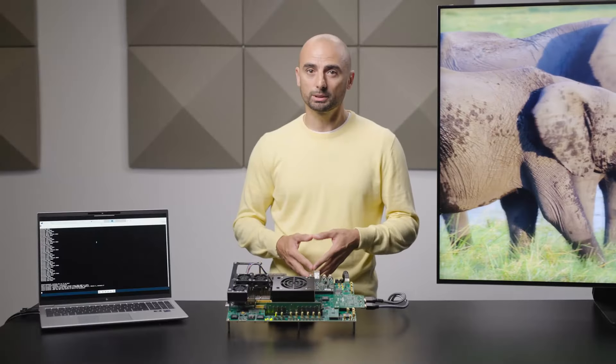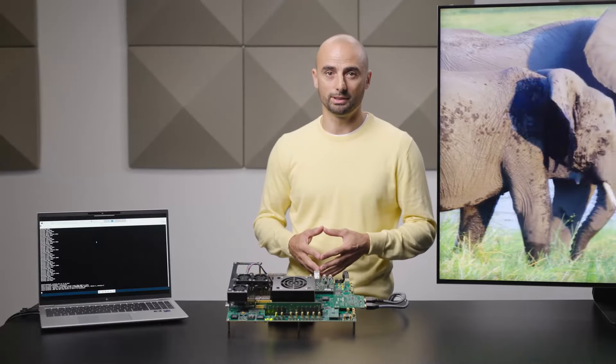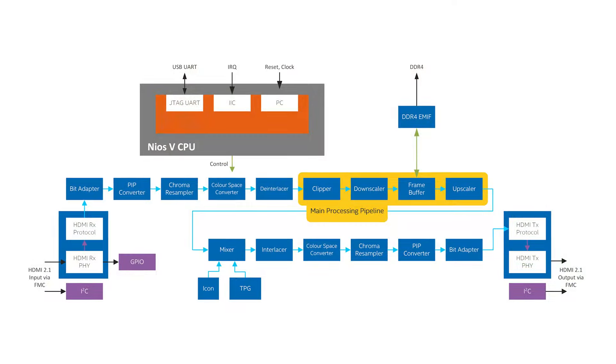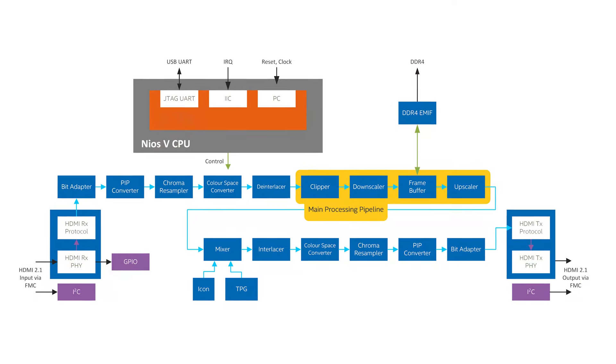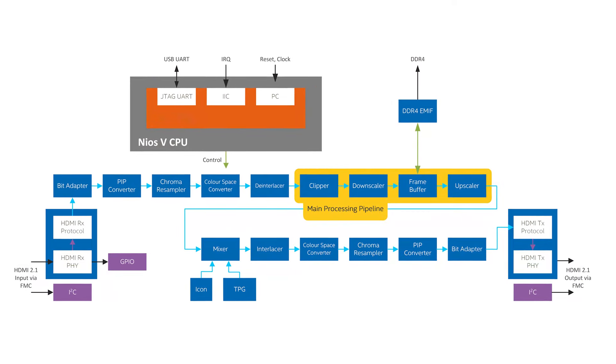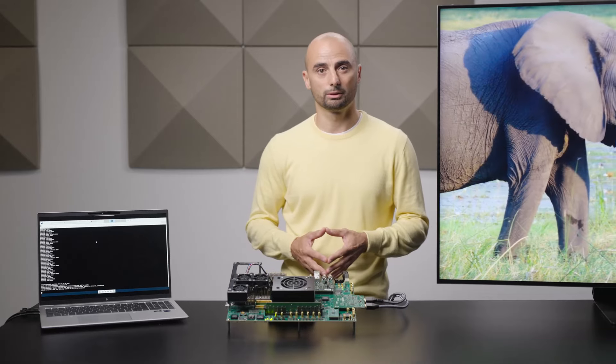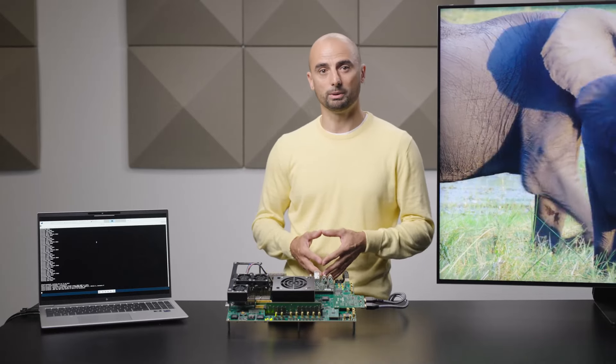The main processing pipeline of the design contains a clipper, a downscaler, a framebuffer, and an upscaler. The framebuffer is configured to drop and repeat frames as required to match the input and output frame rates, and the scalers allow the output to run at a different resolution than the input.